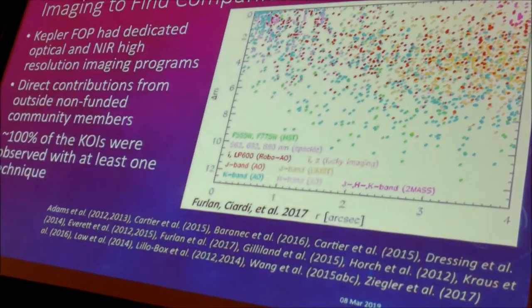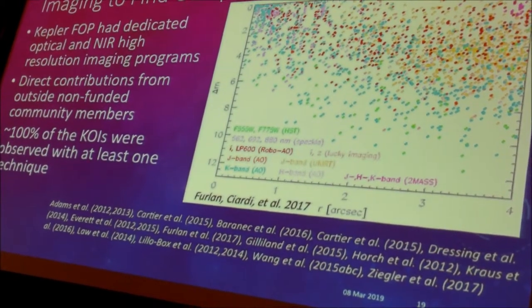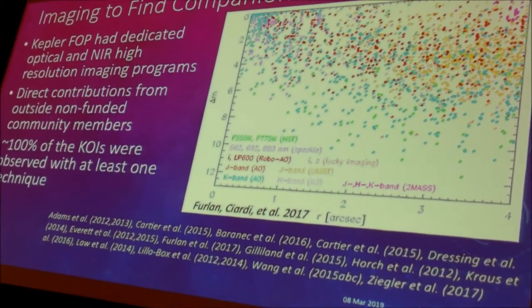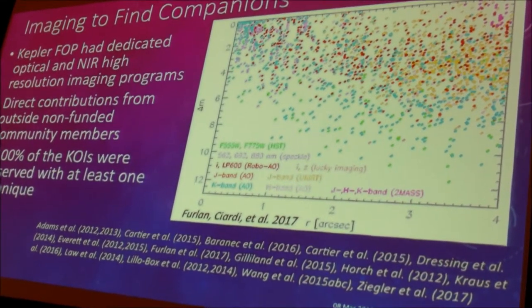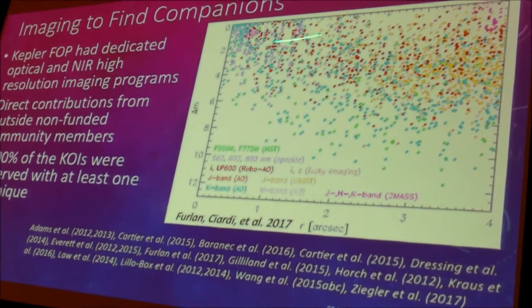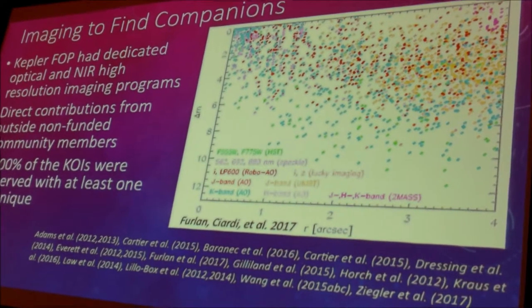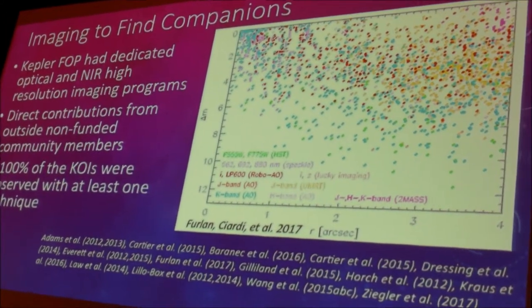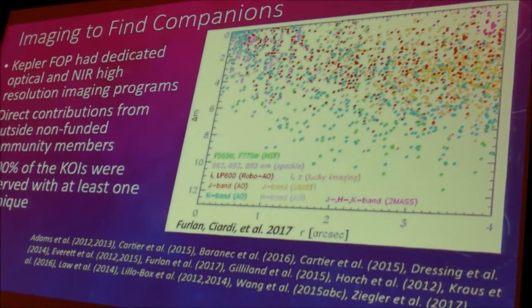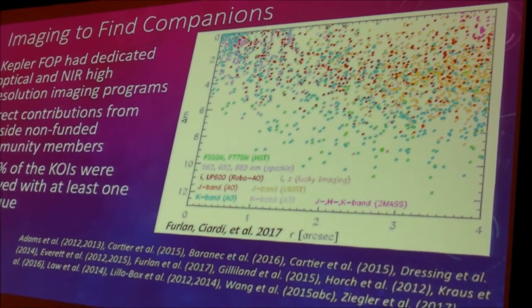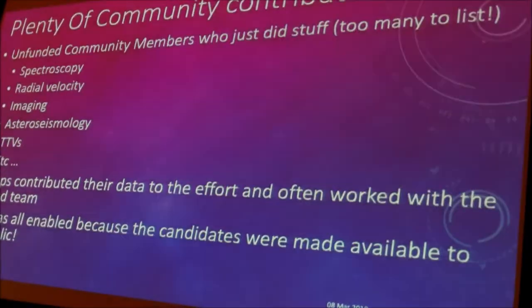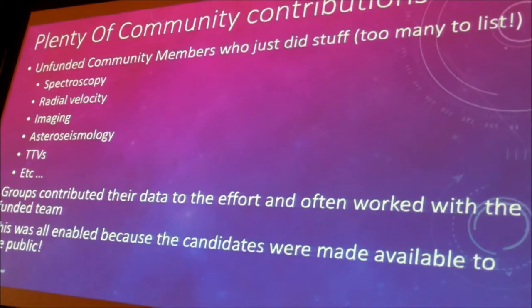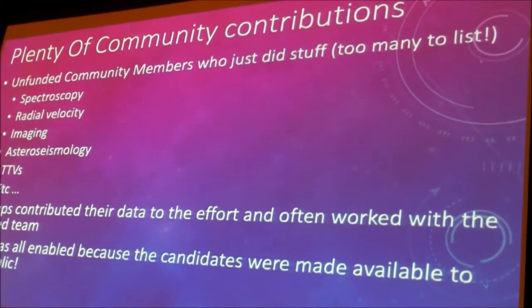Getting the high-resolution imaging was absolutely critical to really understanding the planet properties and the distribution of planetary radii. There was a dedicated effort within the Kepler follow-up observation program itself, but the community also contributed an enormous amount of data. This is a plot from Elise Furlan's paper, where she compiled not only our imaging results but all the imaging results published in the literature at that time — it has grown even further since then. By the time we got to the end, nearly 100% of the KOIs were observed with at least some kind of high-resolution imaging technique.